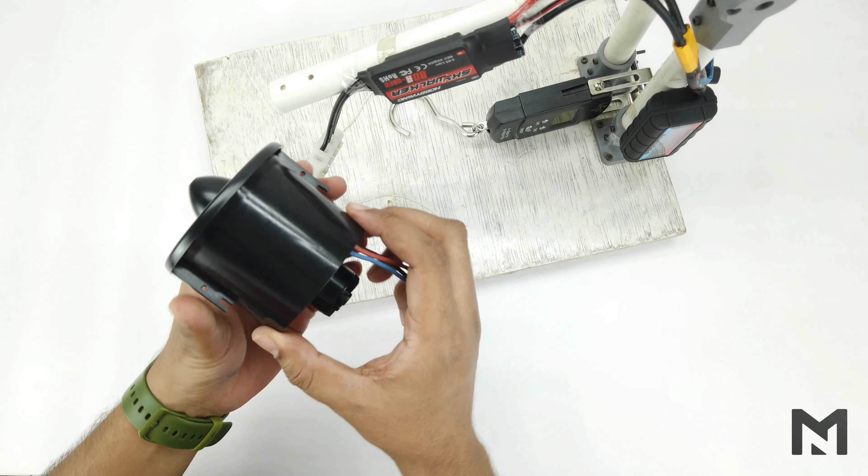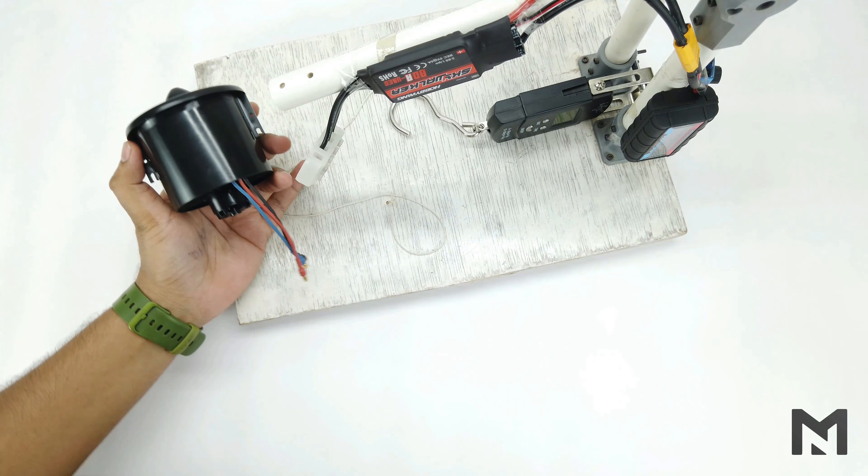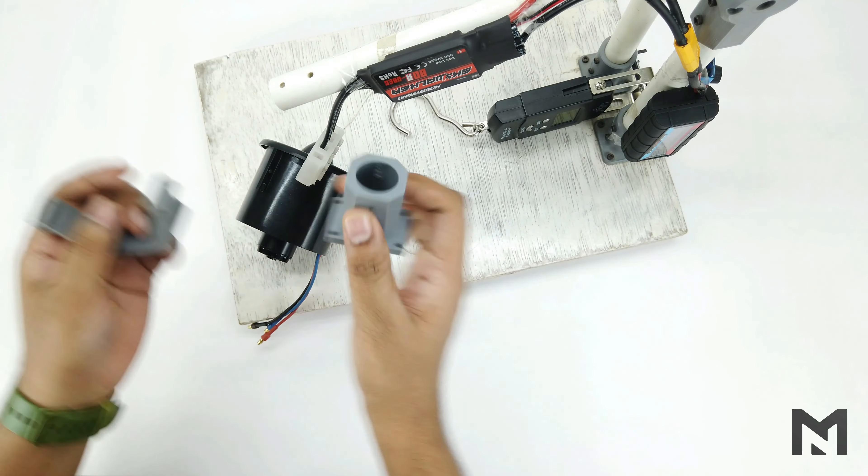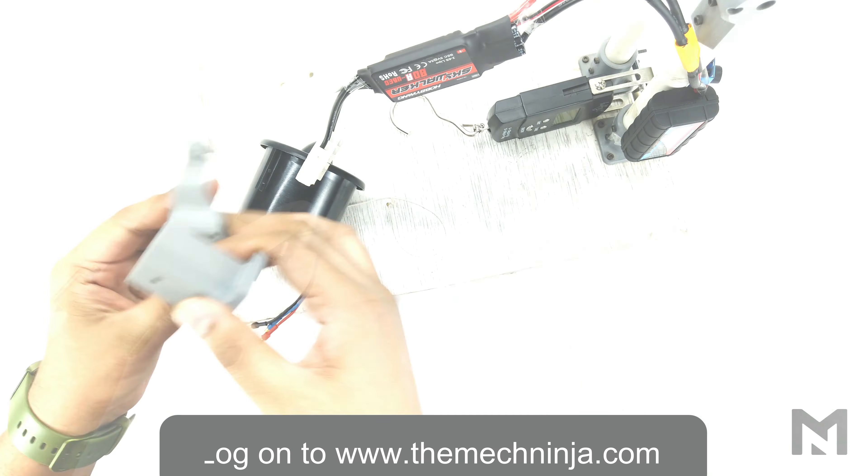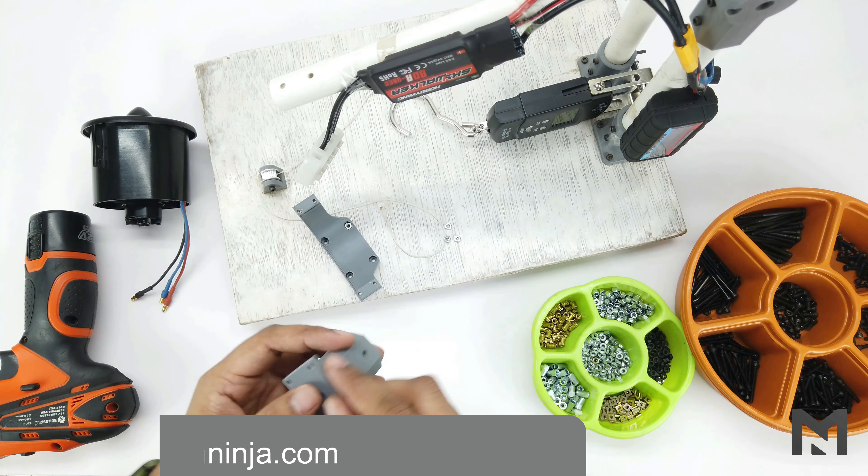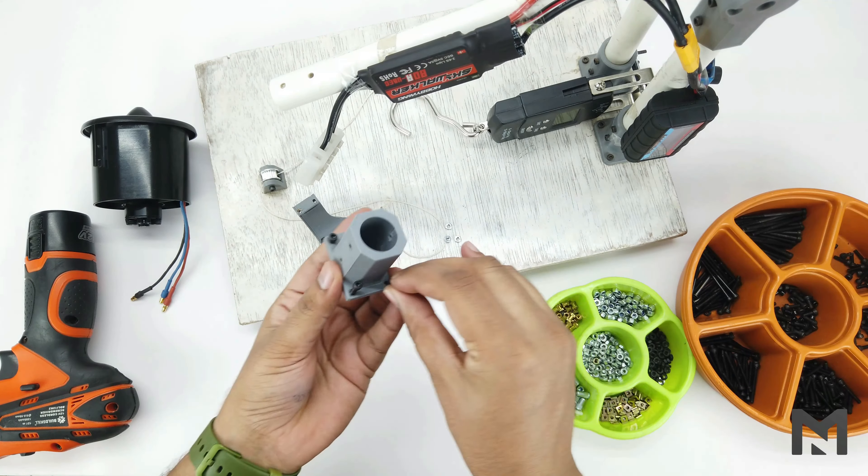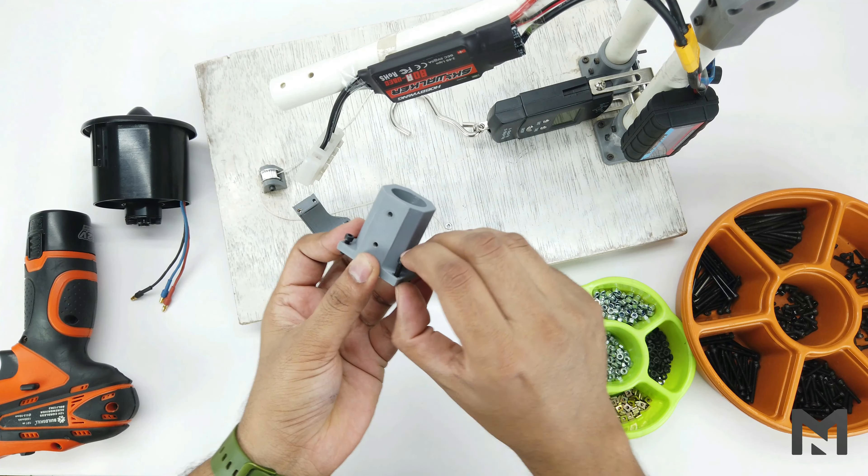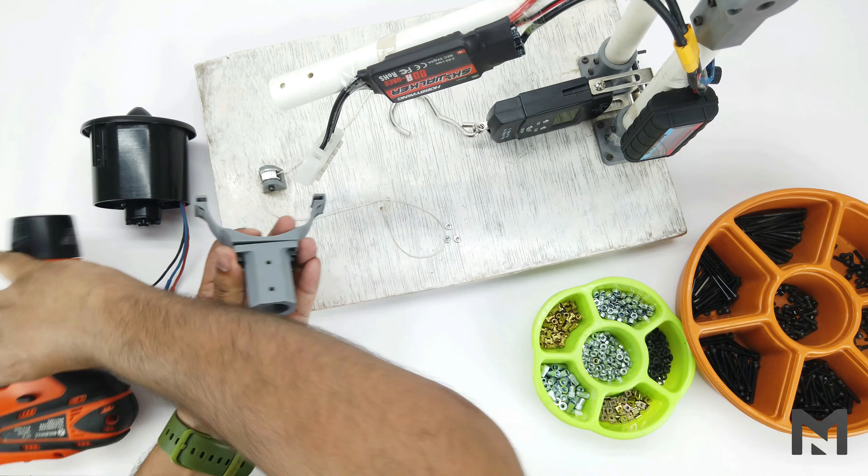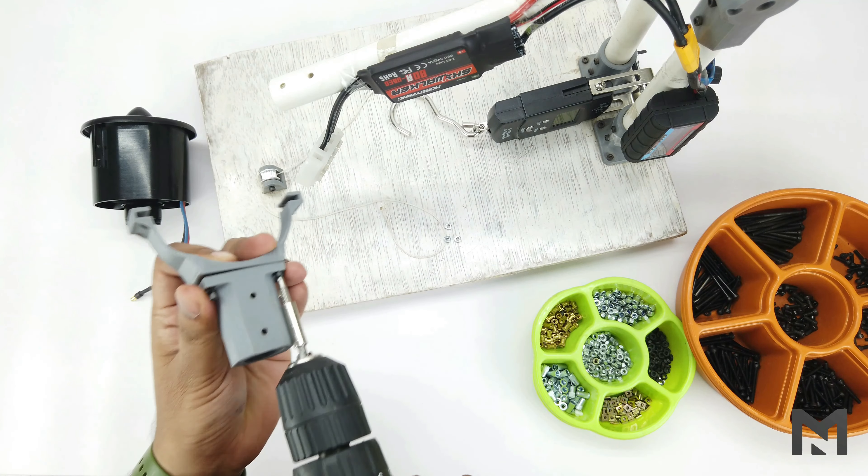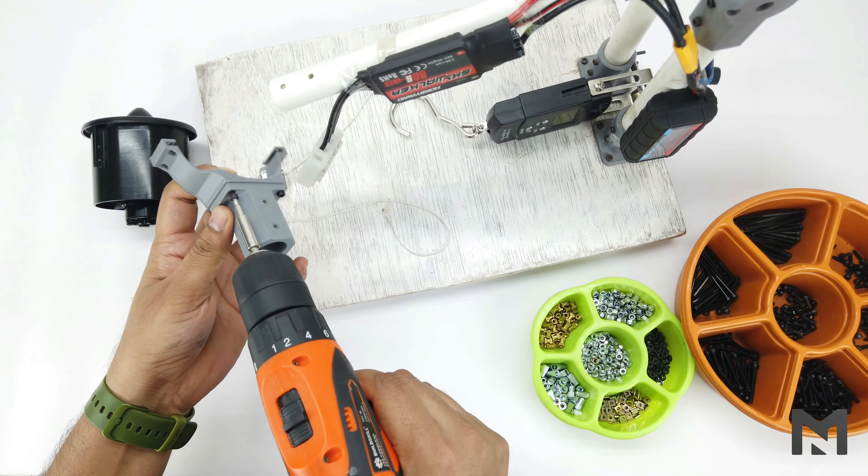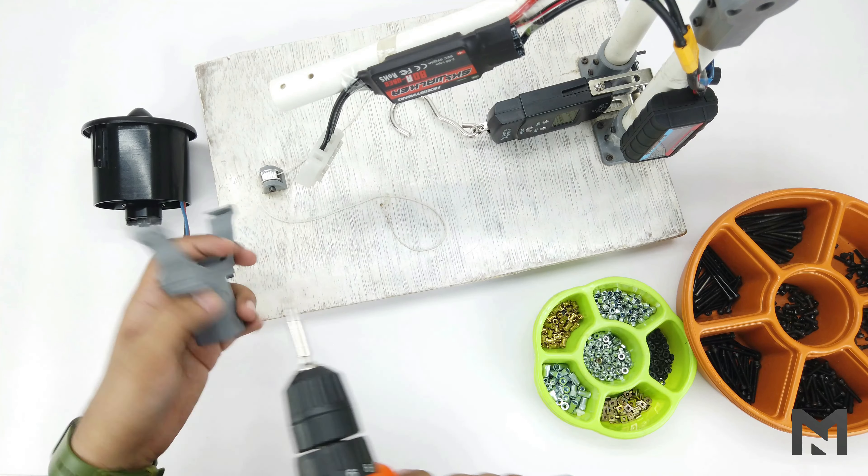As you can see in the EDF, there is no such mount which I can directly connect to. So I have made these two 3D printed parts to connect it. I have provided the parts link in the description. Now I will attach them with the EDF. I am using 10mm screws of M3 size.